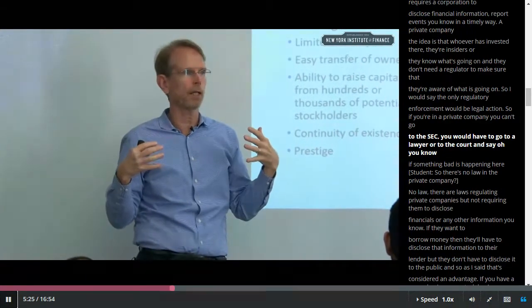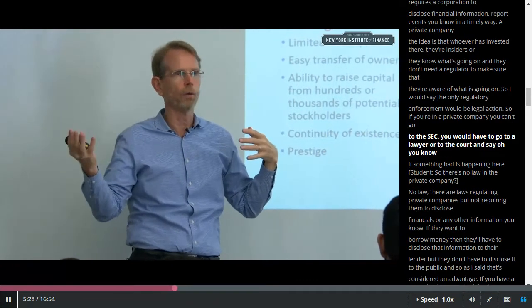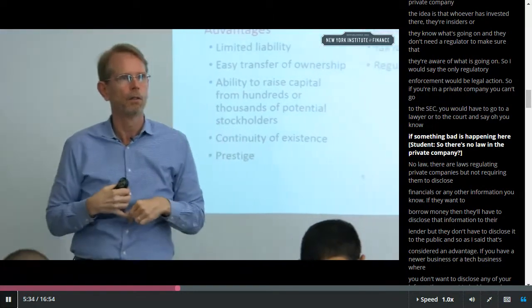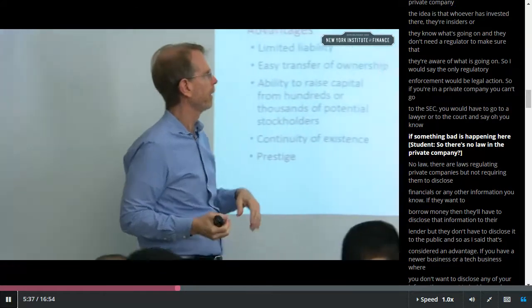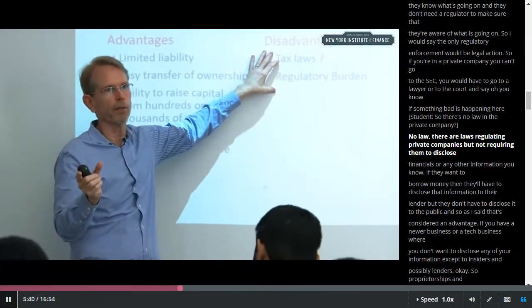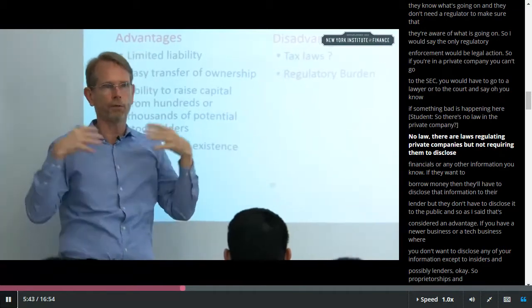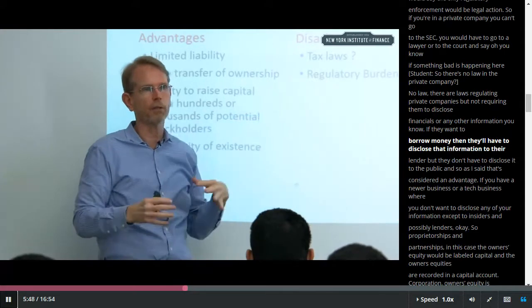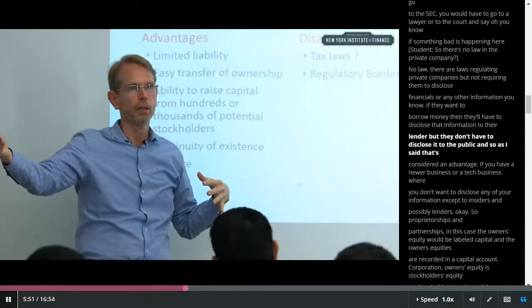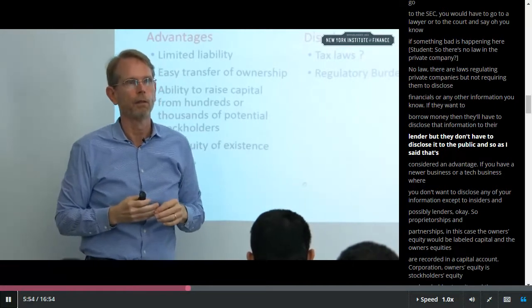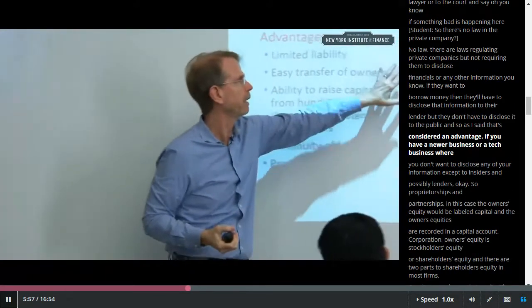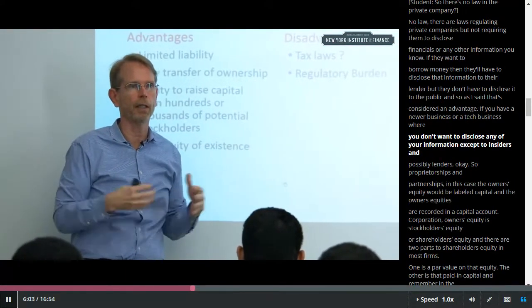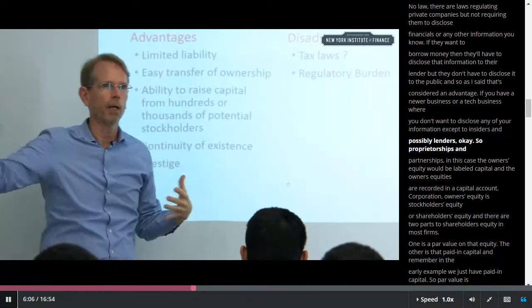If you're in a private company, you can't go to the SEC — you'd have to go to a lawyer or the court and say something bad is happening here. There are laws regulating private companies, but not requiring them to disclose financials or any other information. If they want to borrow money, they'll have to disclose that information to their lender, but they don't have to disclose it to the public. That's considered an advantage if you have a newer business or a tech company — you don't want to disclose any of your information except to insiders and lenders.